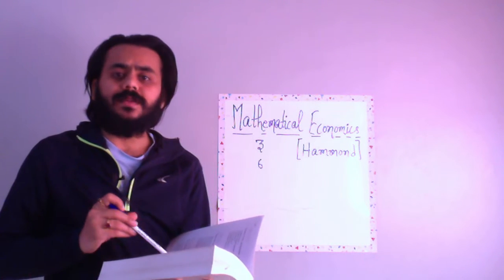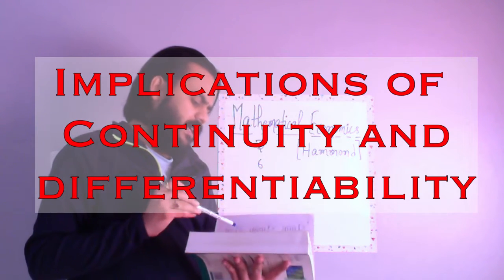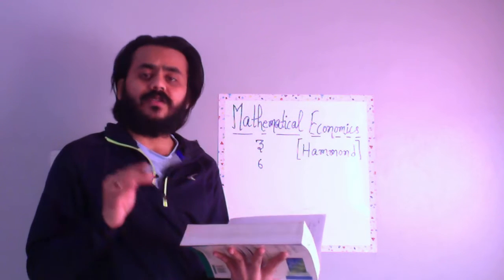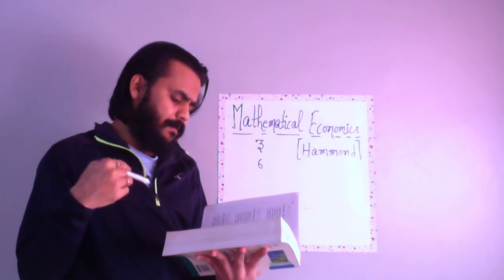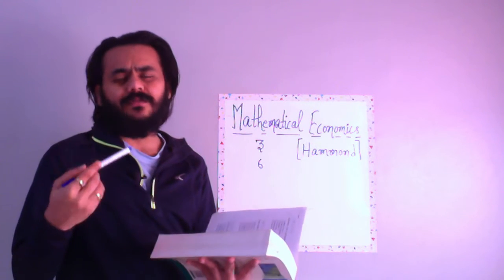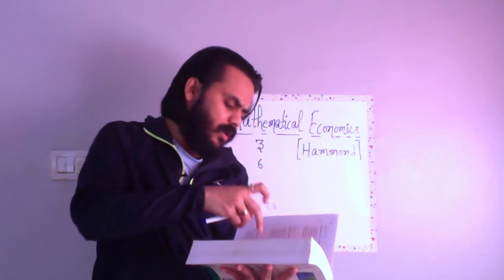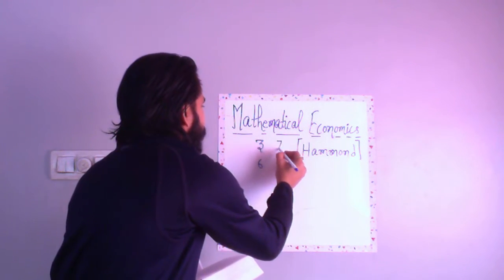Then chapter seven. In chapter seven you have implications of continuity and differentiability. This chapter is not very new for J math syllabus, but still has a bit of treatment which you need to get more depth into.